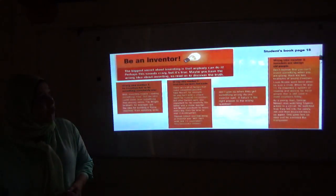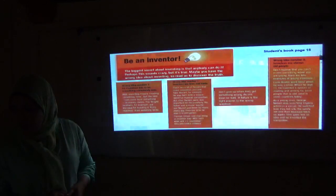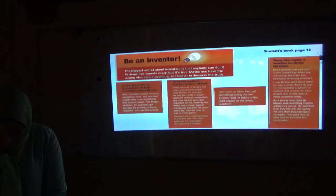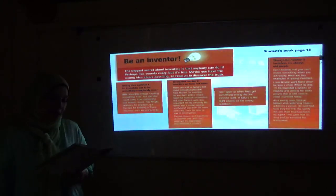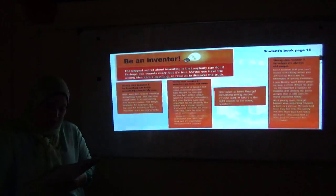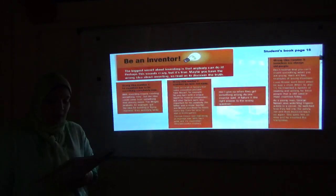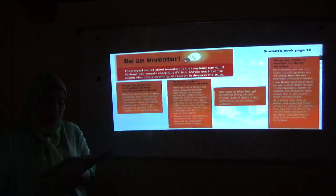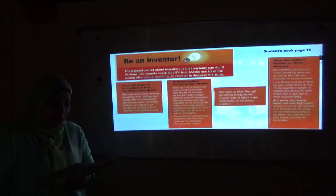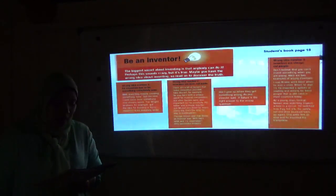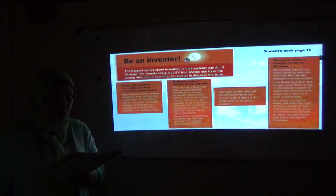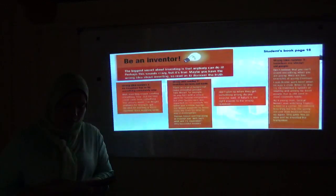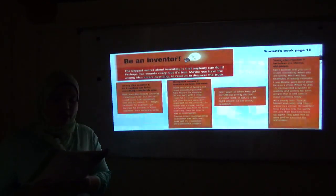Now we have the second text in your book, page 15. Please, my dears, open your book, page 15 and read this text well. The biggest secret about inventing is that anybody can do it. Perhaps this sounds crazy, but it's true. Maybe you have the wrong idea about inventing. So read on to discover the truth. Wrong idea number one: an invention has to be something completely new. Well, inventing means creating something new, but the idea could come from something that already exists.